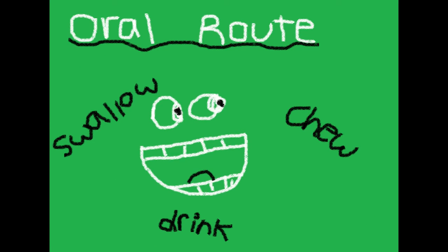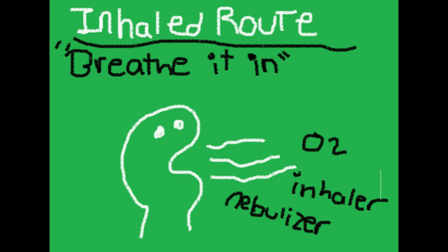Oral is the most common route — that's just taking anything by mouth. So taking a chewable tablet, swallowing a pill, or having a liquid medication are all oral medications. Inhaled medication is anything that you breathe in. If you think of an inhaler, that's inhaled medication. Nebulizers are inhaled medication. Oxygen is also an inhaled medication.